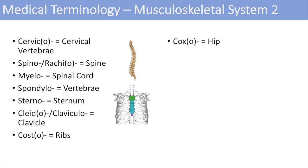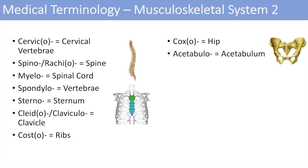The next one is coxo, which denotes the hip. The next one is acetabulo, which denotes the acetabulum — the acetabulum is actually where the hip joint, or the joint of the femur bone, meets the pelvis or the pelvic bone. The next one is ischio, which denotes the ischium, one of the three bones that makes up the pelvis. The next one is ileo, which denotes the ileum — another one of the three pelvic bones.